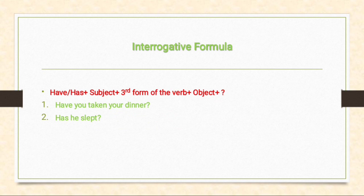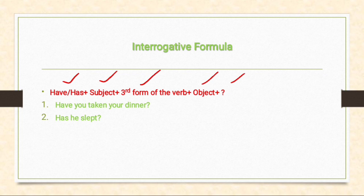Interrogative formula: have/has + subject + third form of the verb + object + question mark. In the interrogative formula, the question mark is essential. For example: 'Have you taken your dinner?' — 'have' is the helping verb, 'you' is the subject, 'taken' is the third form of the verb, 'your dinner' is the object, and we end with a question mark. 'Has he slipped?'